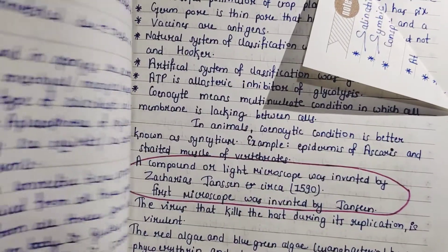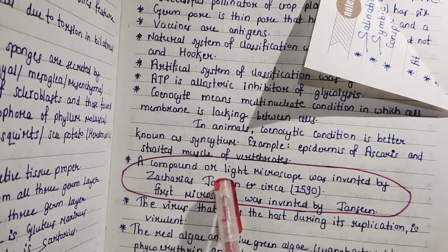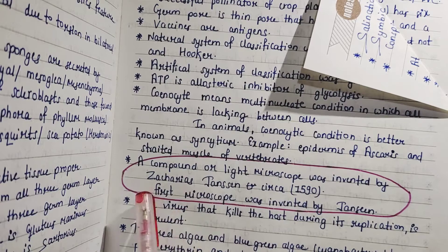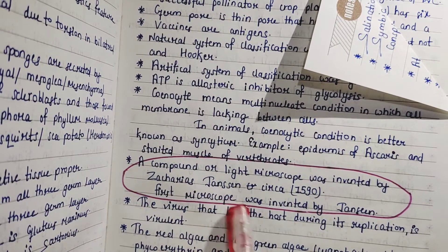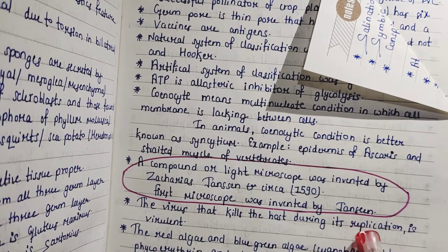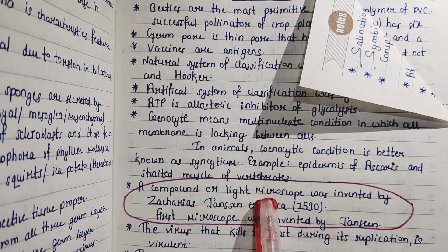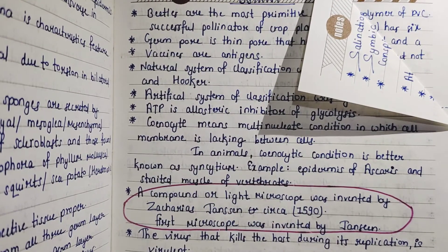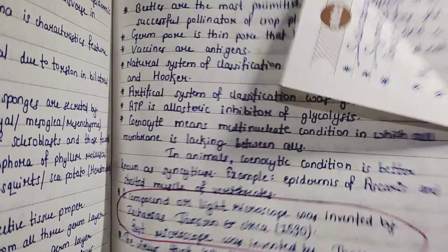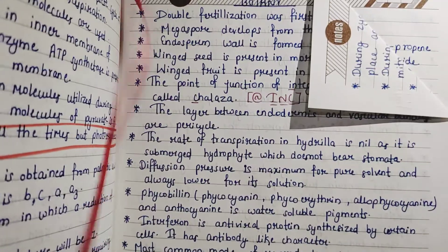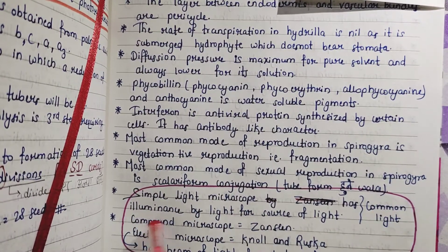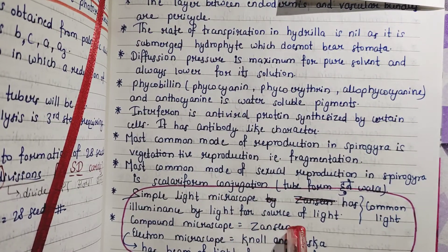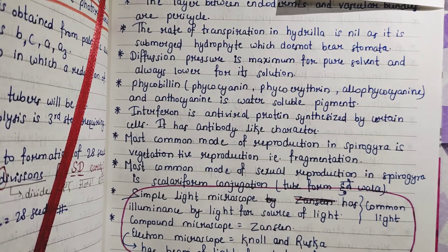From here you can see: the compound or light microscope was invented by Zacharias Janssen — whatever, the first microscope was invented by Janssen. These are the kinds of points that I had gotten wrong in model tests, so I noted them carefully. These are the questions that have been asked in model tests and exams from this chapter.